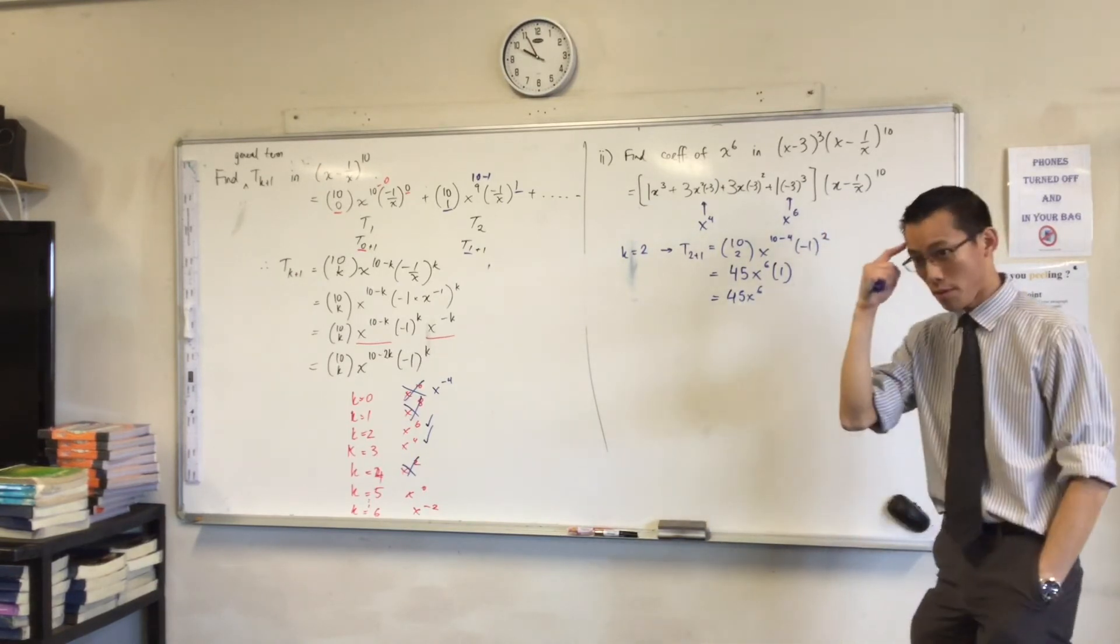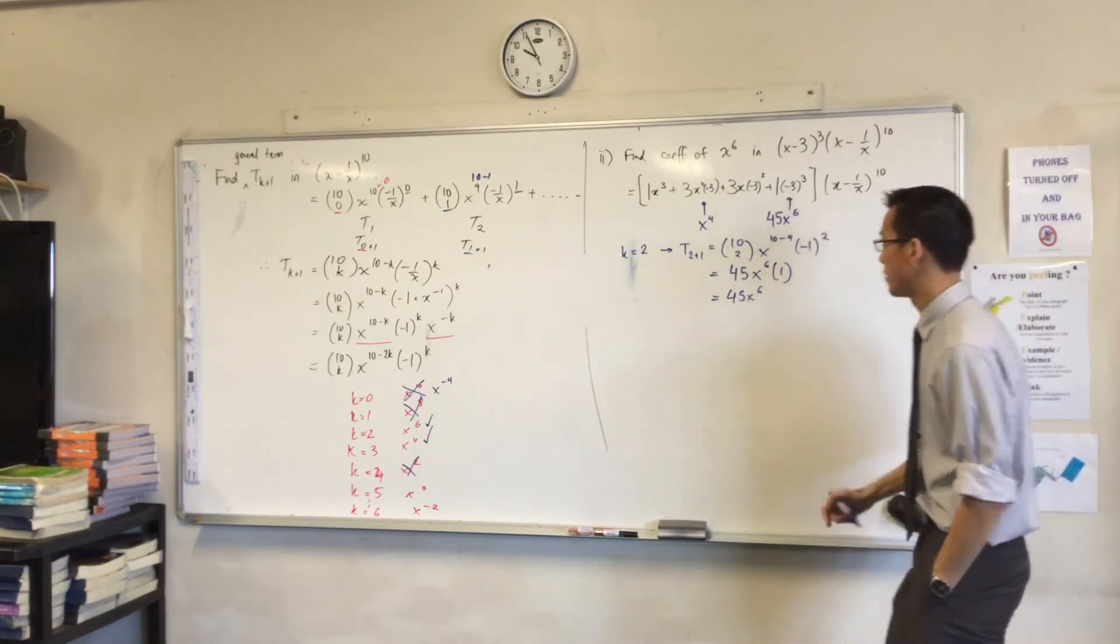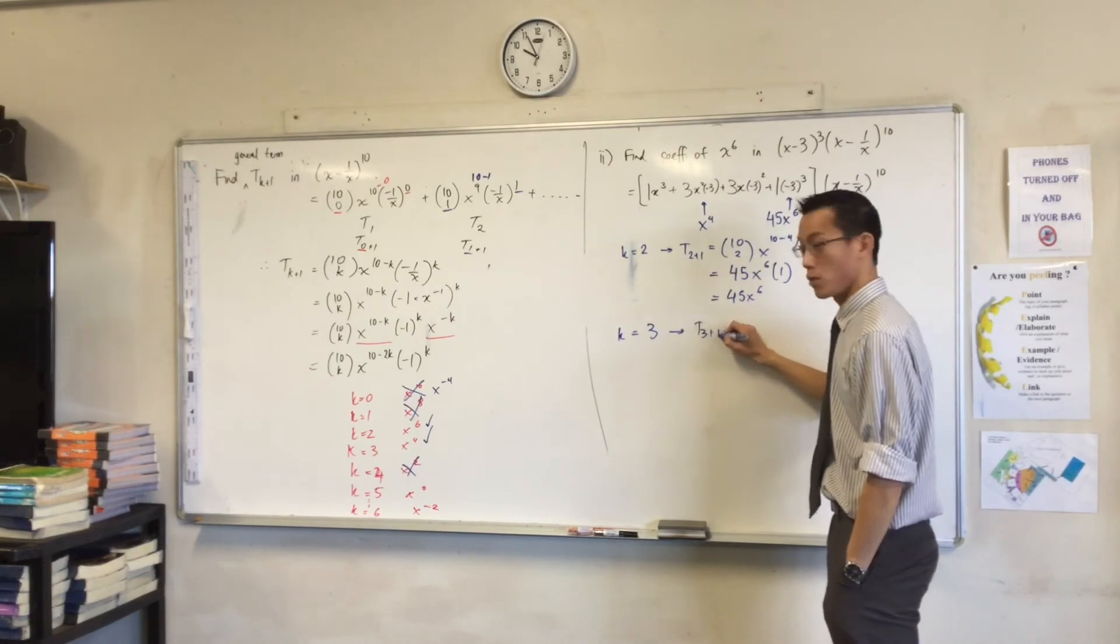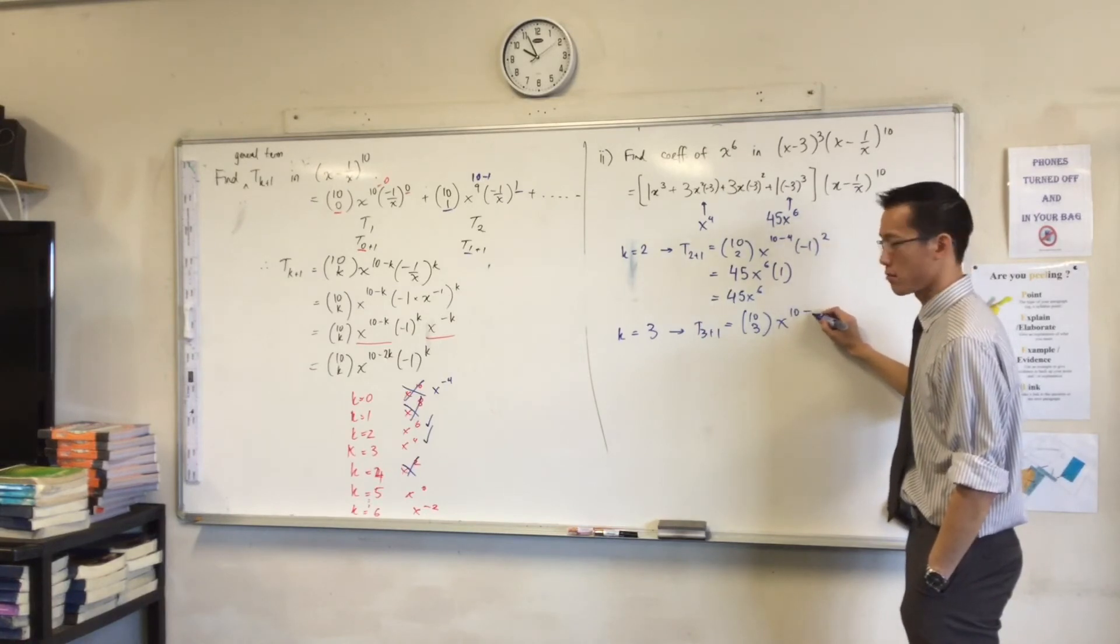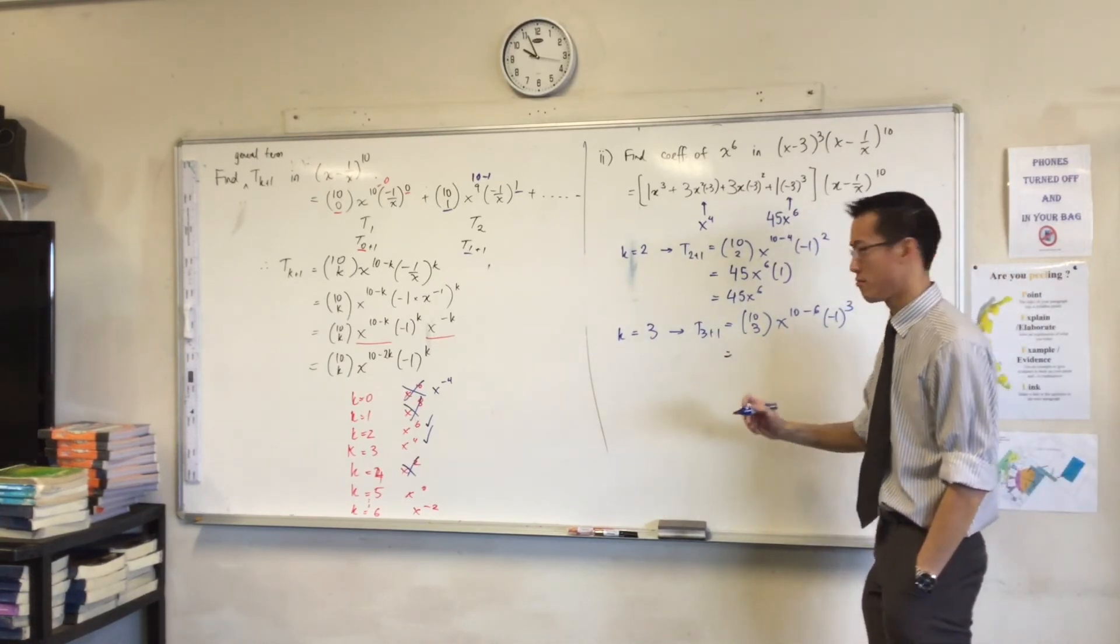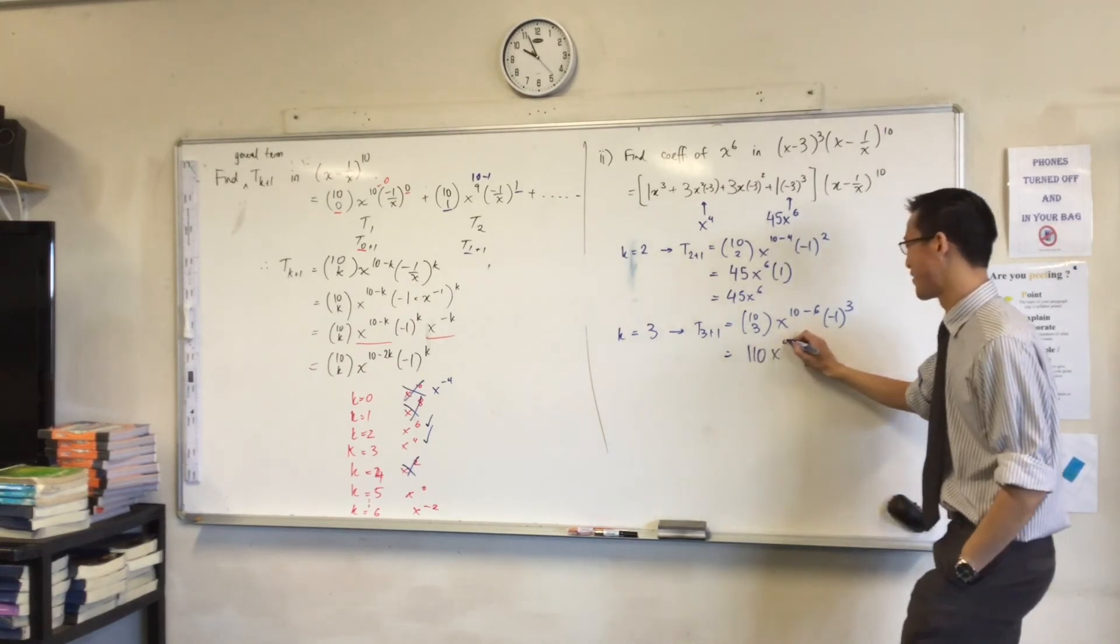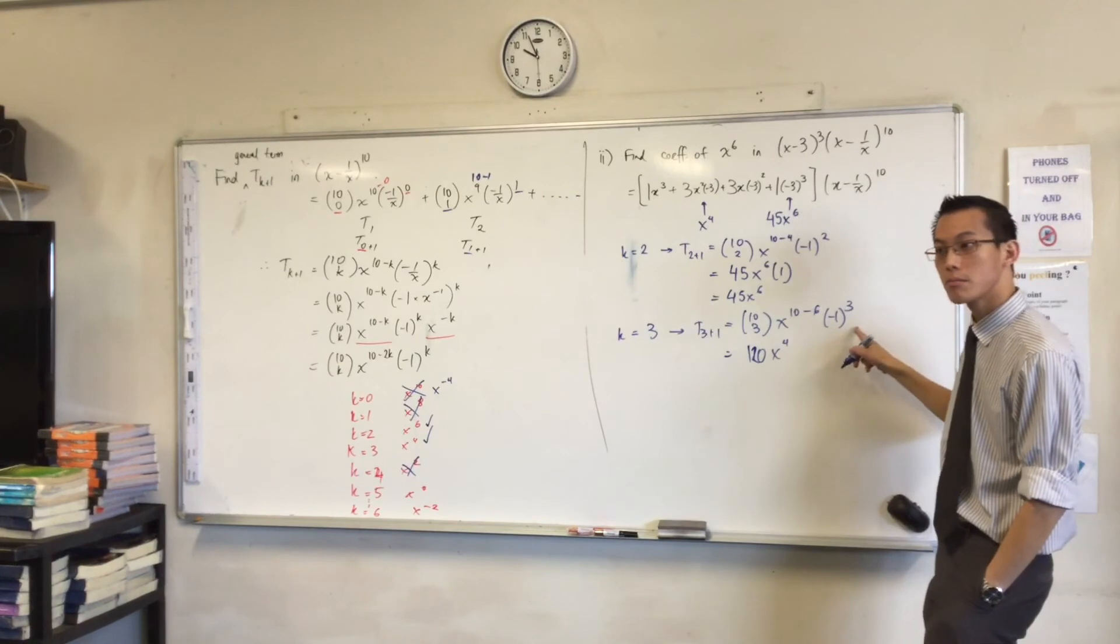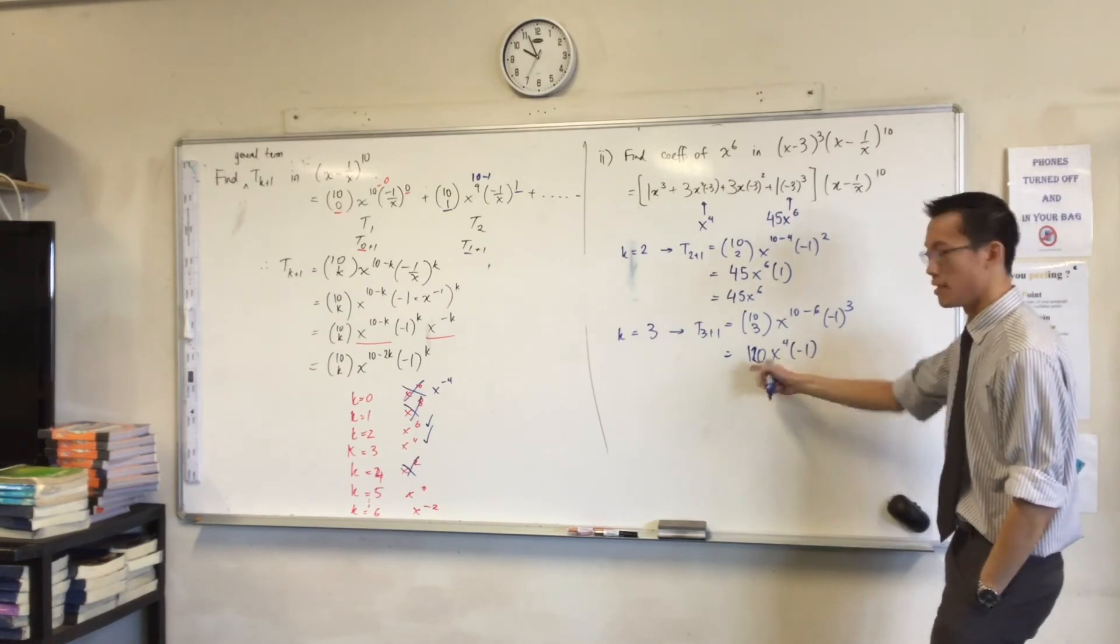The other thing was k equals 3. So I'm going to look at the next term. Term 3 plus 1 equals 10c3 x to the 10 minus 6. 6. Negative 1 to the 3. 10c3? Yeah. Is it 110? 120. So close. 120 x to the 4. So you're 110 still. Yeah, yeah. Well sorry, it was in my head. And then what happens here? Just there's a negative plus the remainder 1. So negative 120.